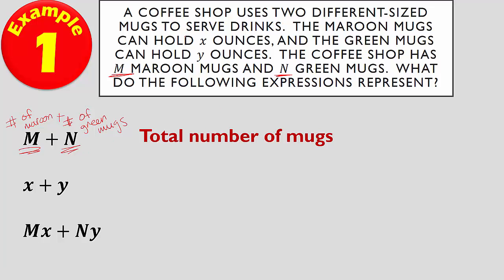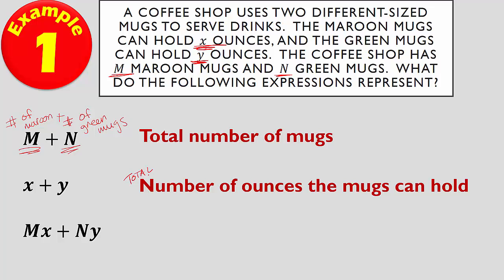If we look at X plus Y, maroon mugs hold X ounces, green mugs hold Y ounces. That's number of ounces plus number of ounces in each mug, so that would be the total number of ounces that the mugs can hold.